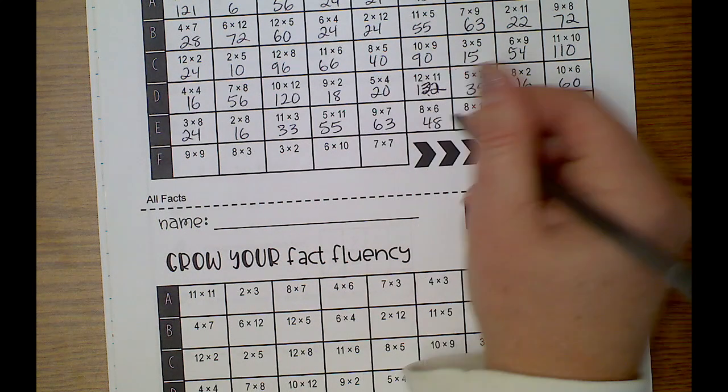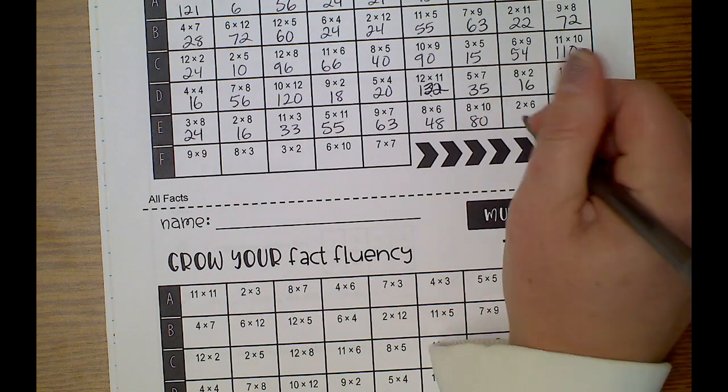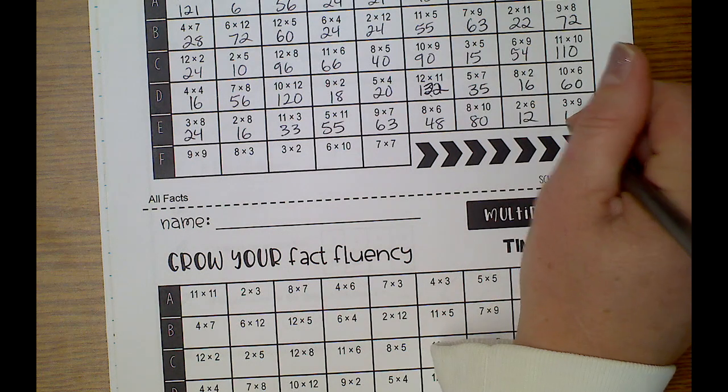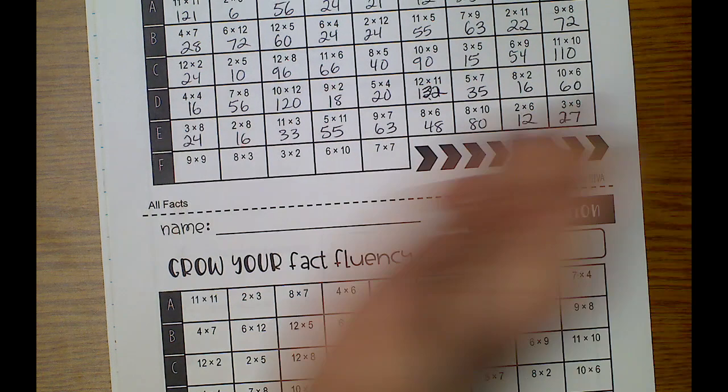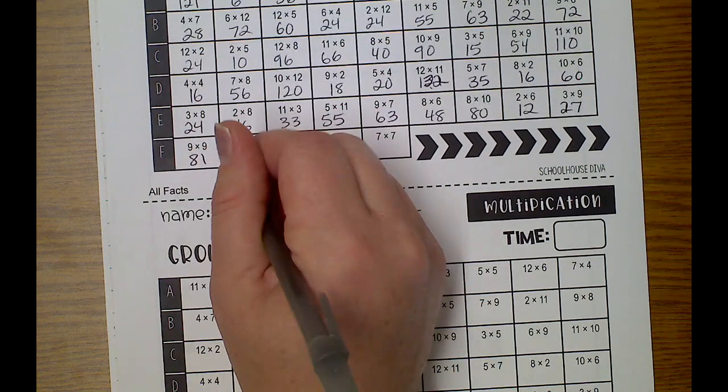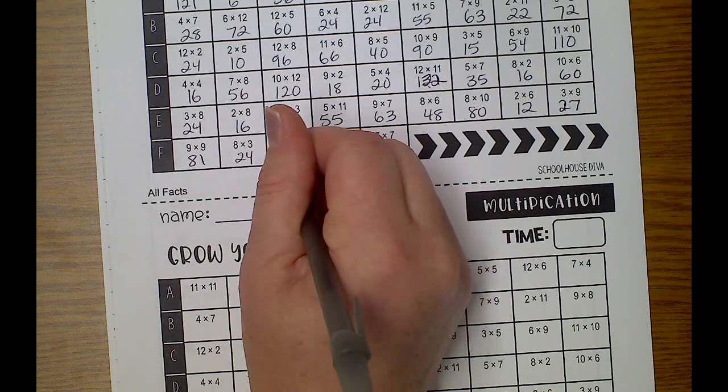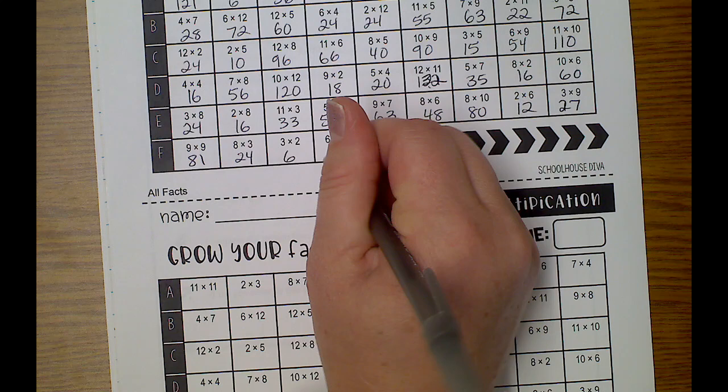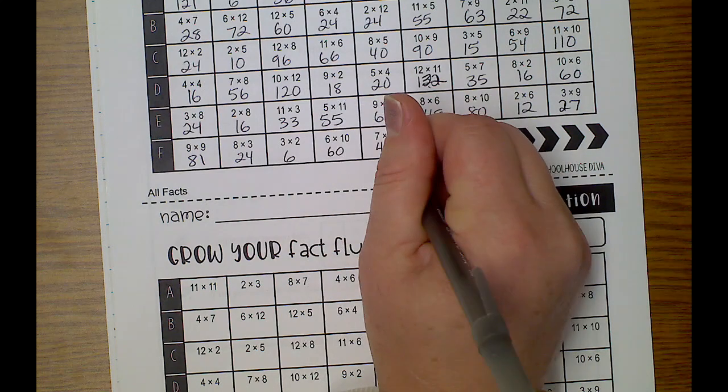48, 80, 12, 27, 81. Again, 124, 61, 24, 6, 60, 49.